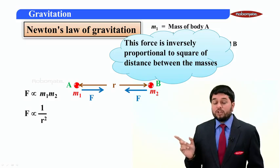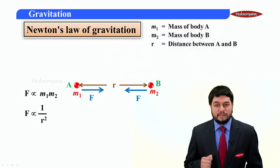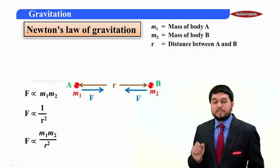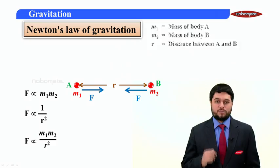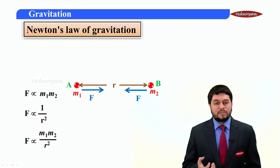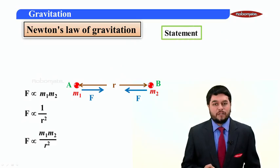If I just accumulate these two proportionalities, I get this gravitational force is proportional to m1 m2 upon r square. And this will be our fundamental to make a statement of the law.